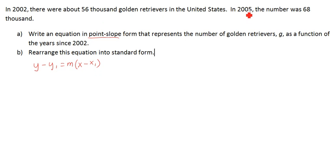Obviously, as time goes on, we're increasing the number of golden retrievers. So understanding the problem is important. Now what we're going to do is we're going to define our variables. We know we're going to have an x and a y.